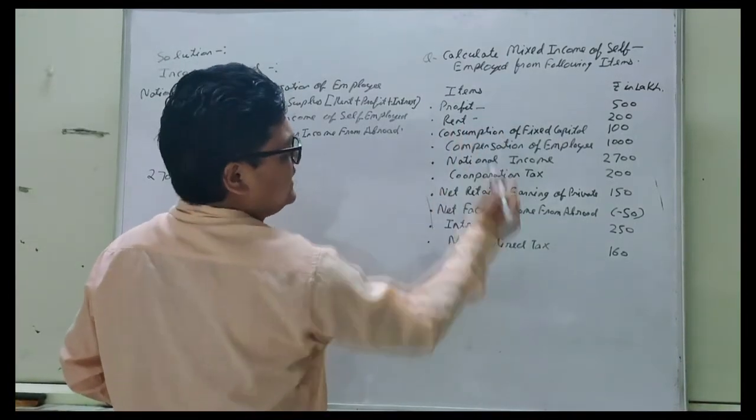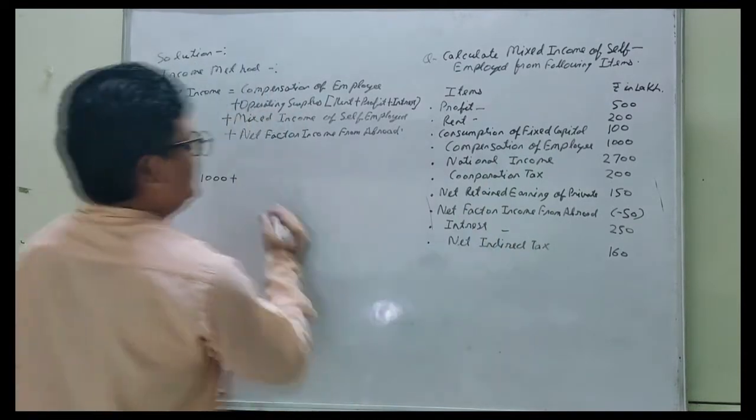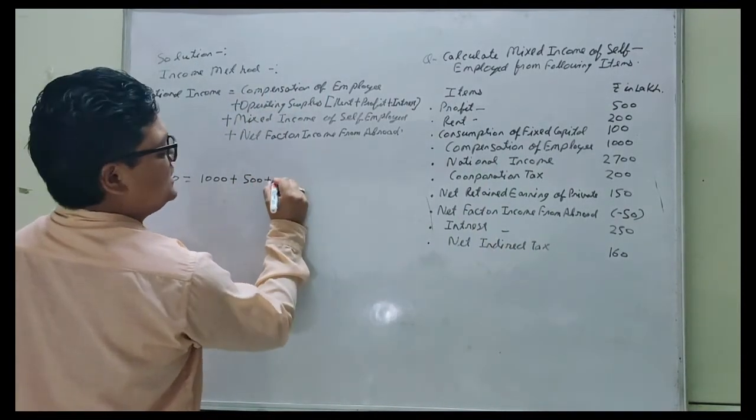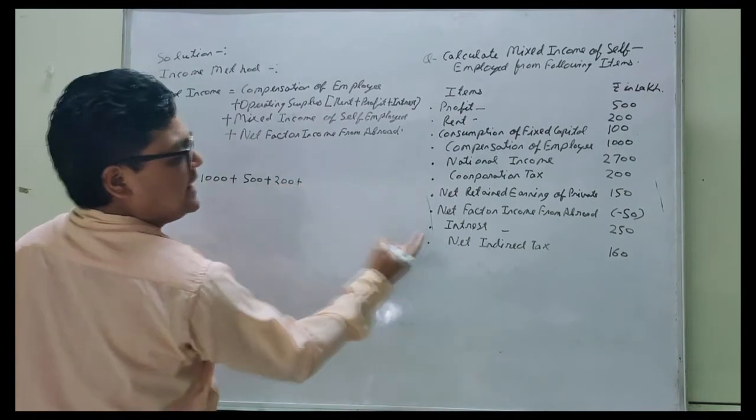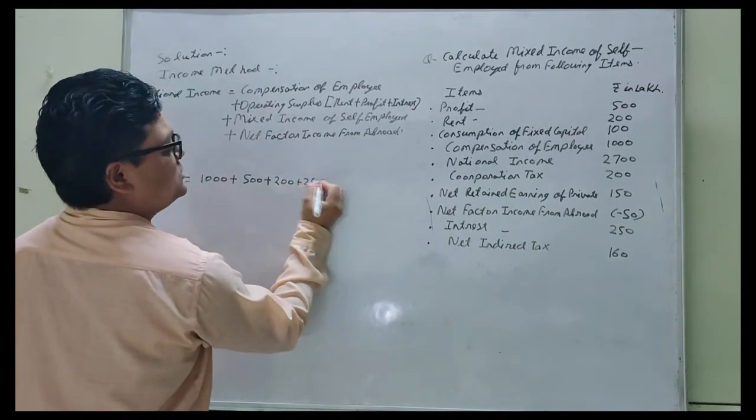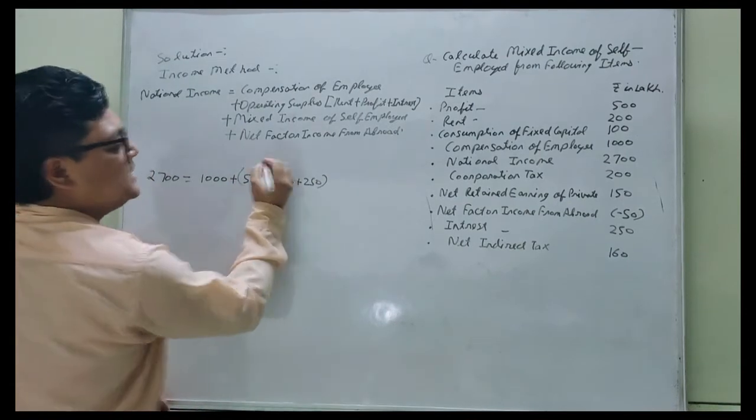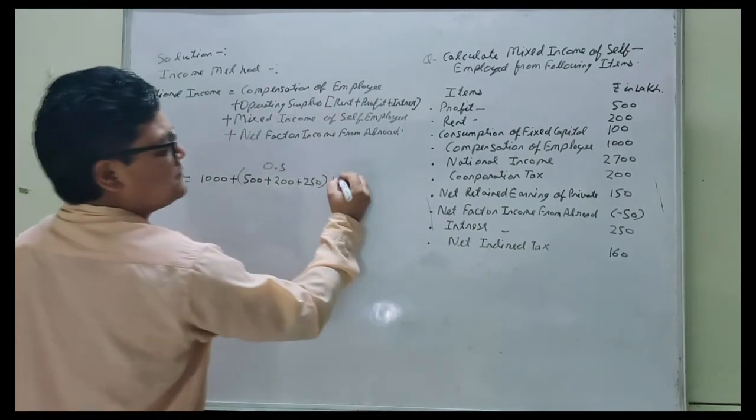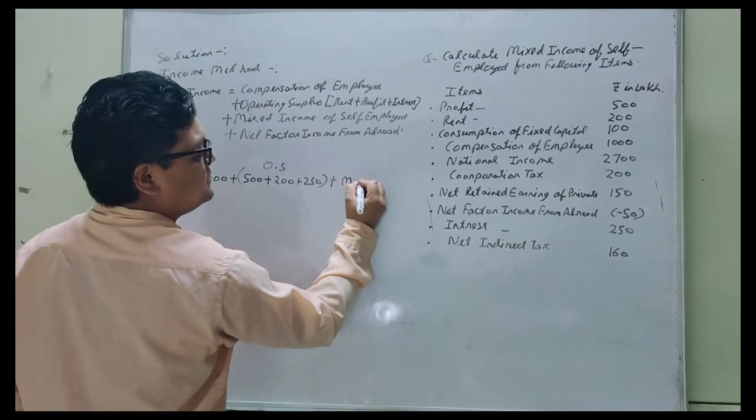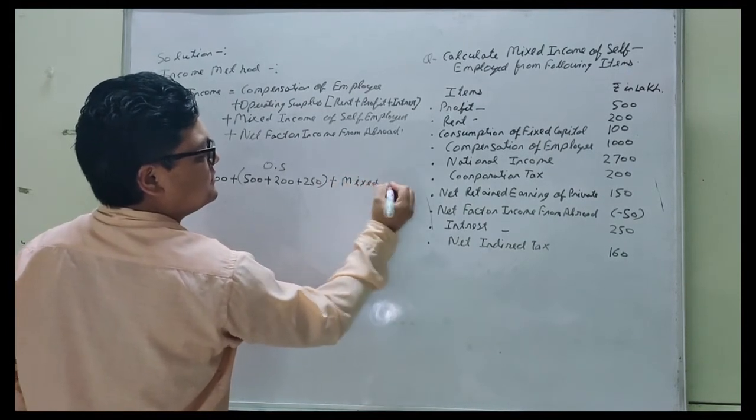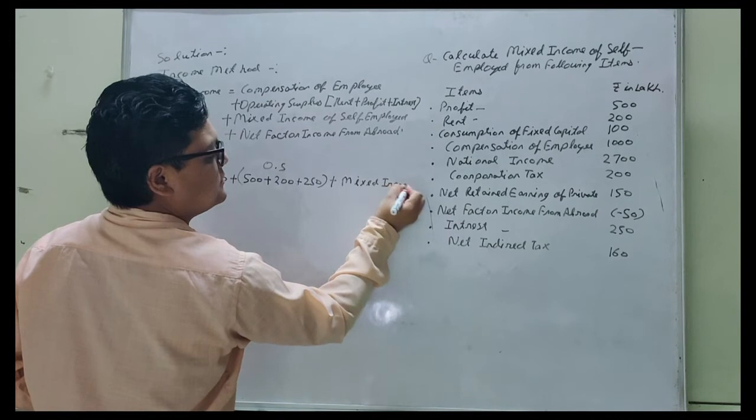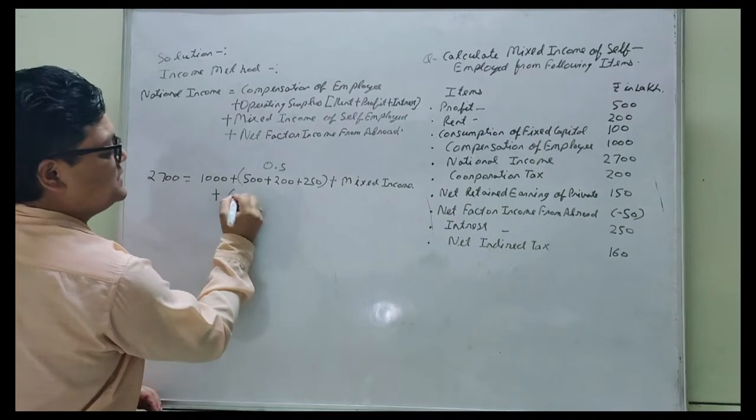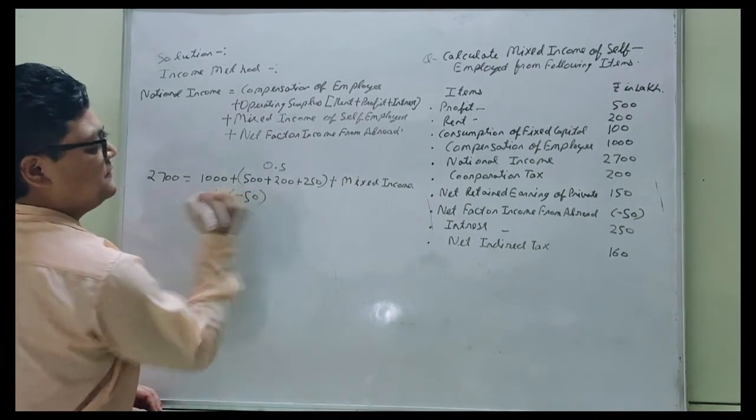Here in operating surplus, we are having profit, rent, and interest. Profit is 500, rent is 200, and interest is 250. So this will be the operating surplus, plus mixed income of self-employed, which we are not having and have to calculate, plus net factor income from abroad, which is minus 50.